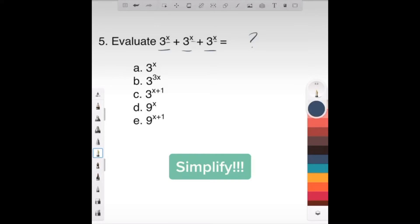How many three to the x's do we have? We have one, two, three. So we can say we have three, three to the x, okay?